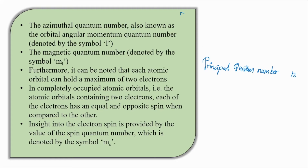The next quantum number is the azimuthal quantum number, also known as the orbital angular momentum quantum number, and the symbol is l. All of these quantum numbers are useful for finding out an atomic orbital, so over here we have l.